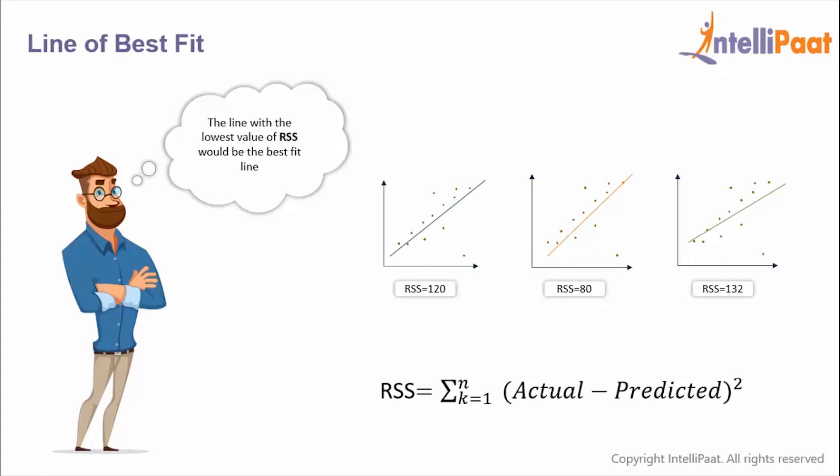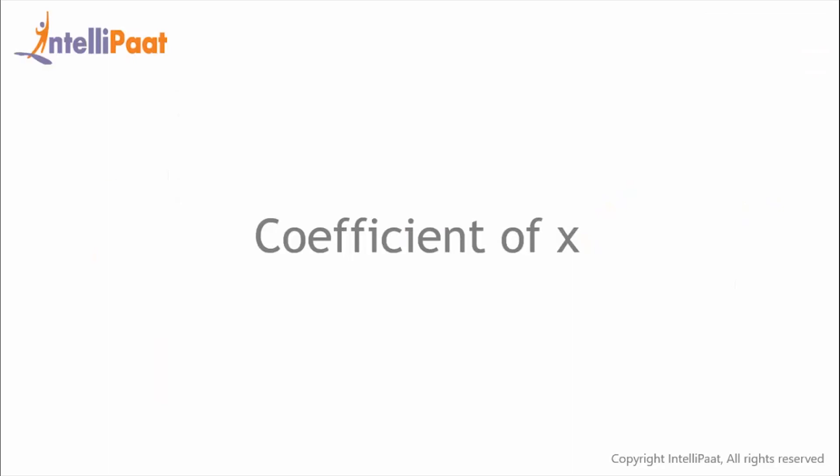So in residual sum of squares, we take the square of all the residuals and then sum them up, and this gives us the value of residual sum of squares. Whichever line has the lowest value of residual sum of squares would be considered as the best fit line.